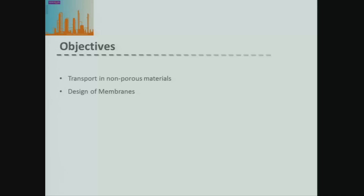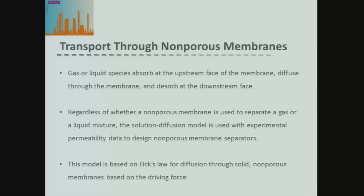Today I'm going to move on to looking at the transport equations through our non-porous or dense membrane material, and then at the end we're going to have a look at how to design a fully mixed flow membrane system. With non-porous membranes, instead of the material just passing through the pores, we have absorption onto the membrane surface, then the material passes through that dense membrane by diffusion, and then we have to dissolve the material on the other side. So we now have essentially extra steps in our transport through our membrane.